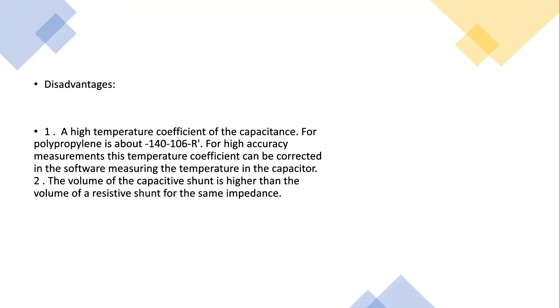The disadvantages are: high temperature coefficient of the capacitance. For polypropylene it is about 140×10^-6. For high accuracy measurements, this temperature coefficient can be corrected in the software by measuring the temperature in the capacitor.